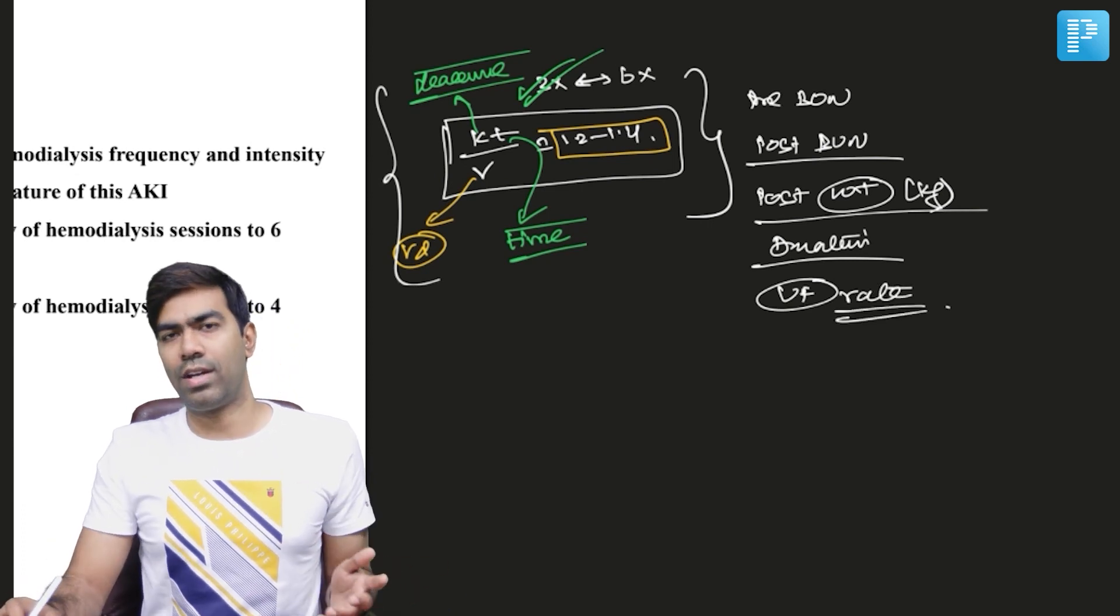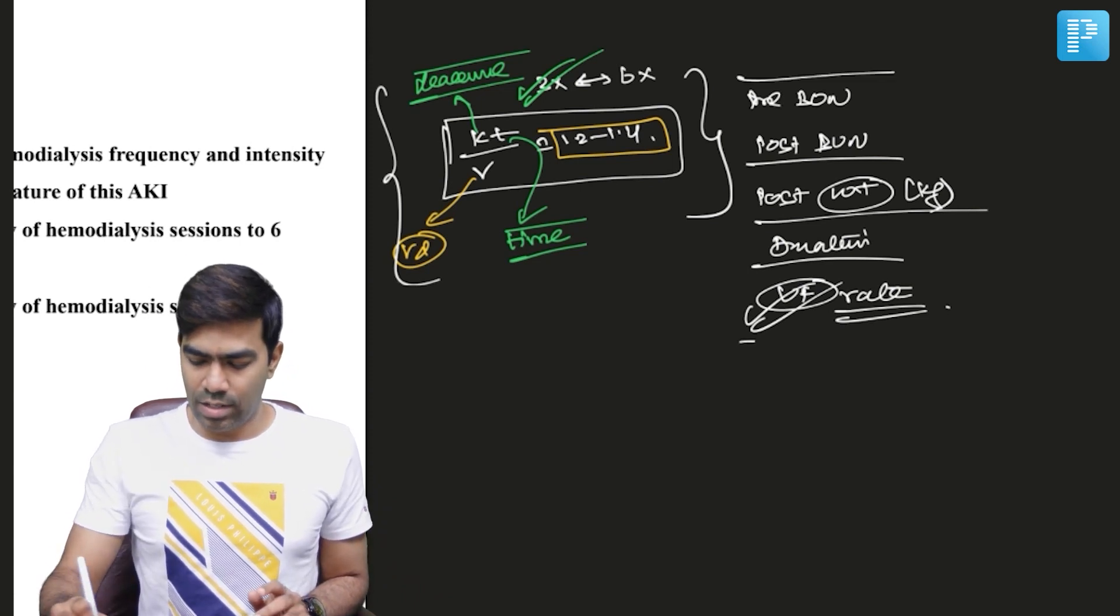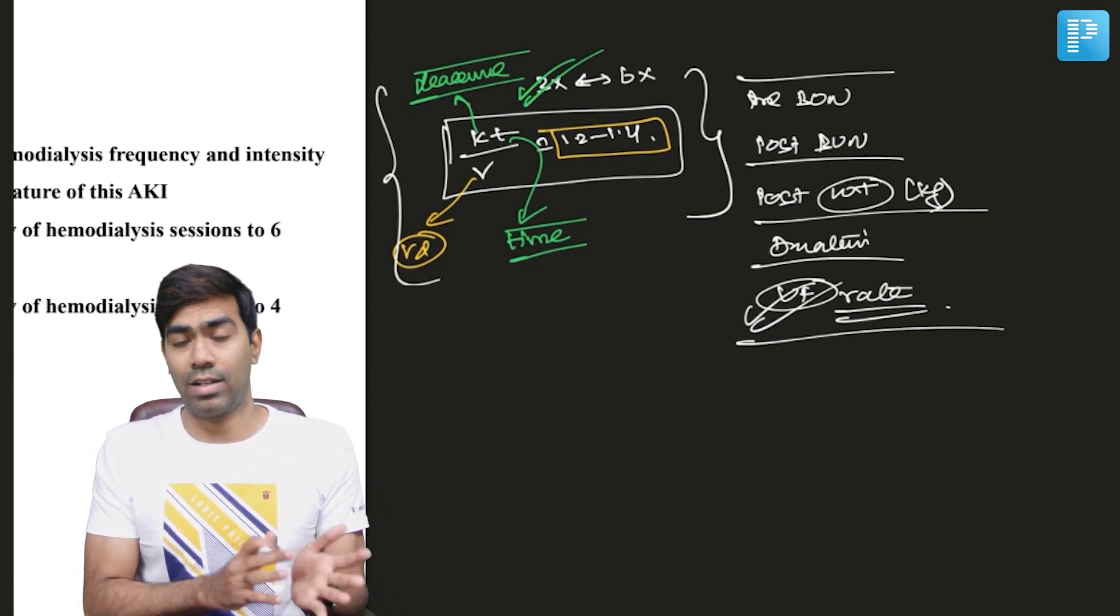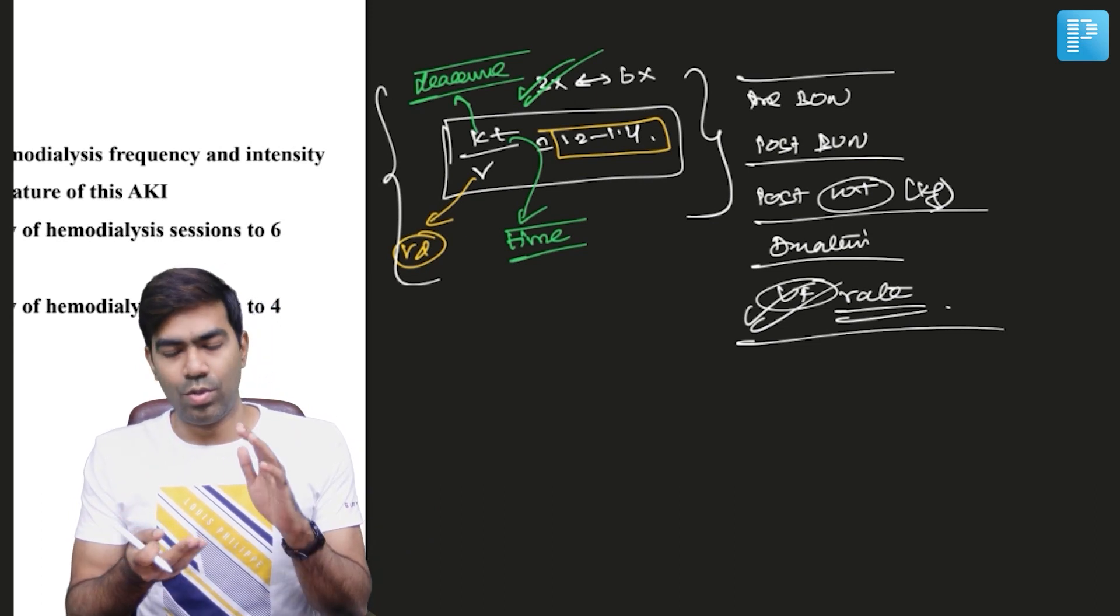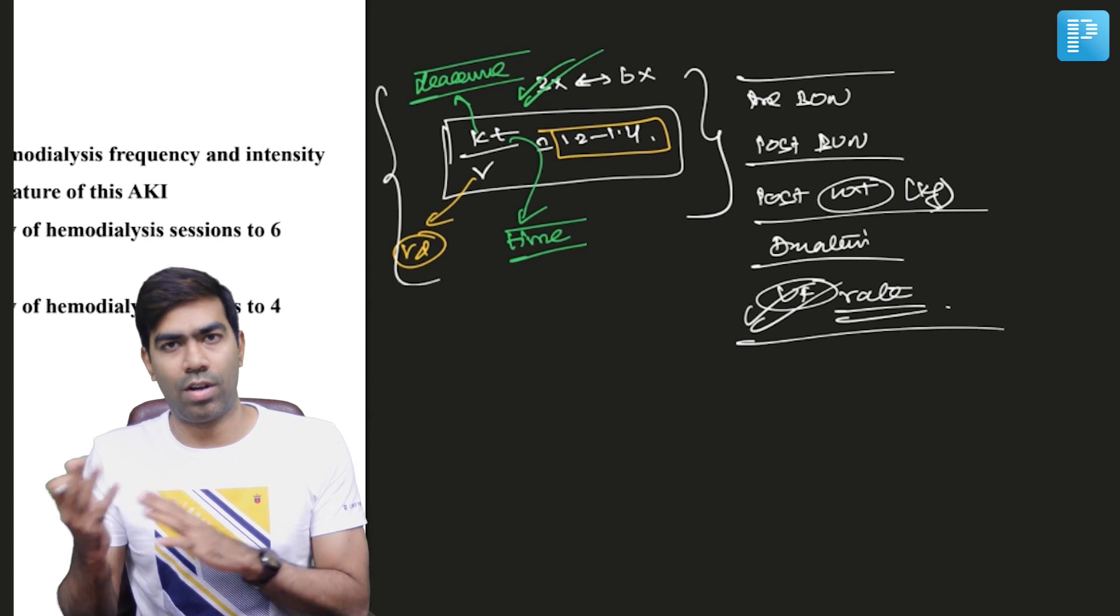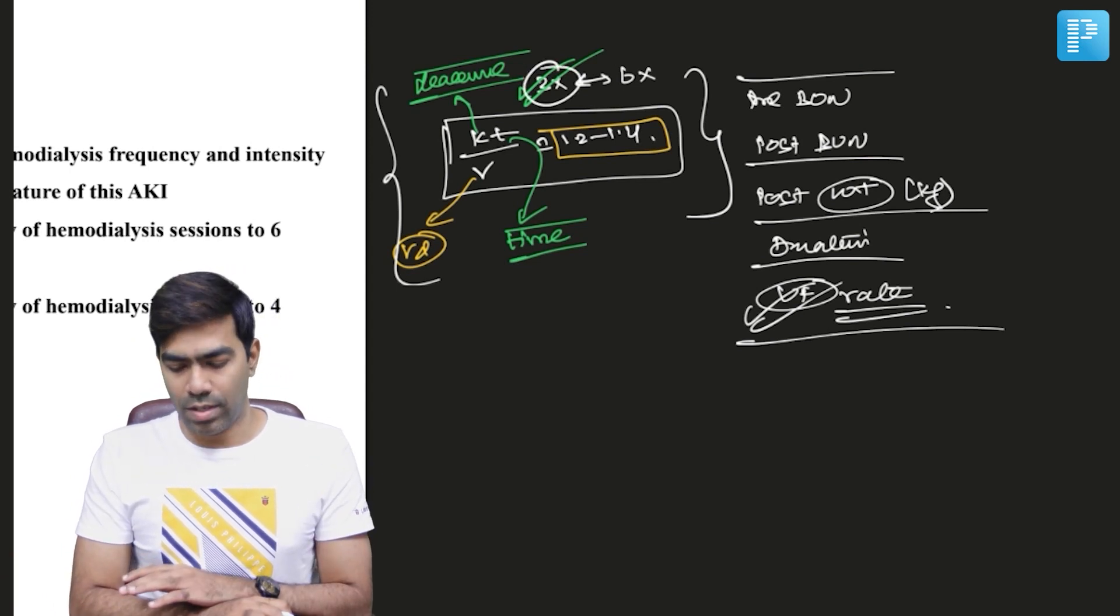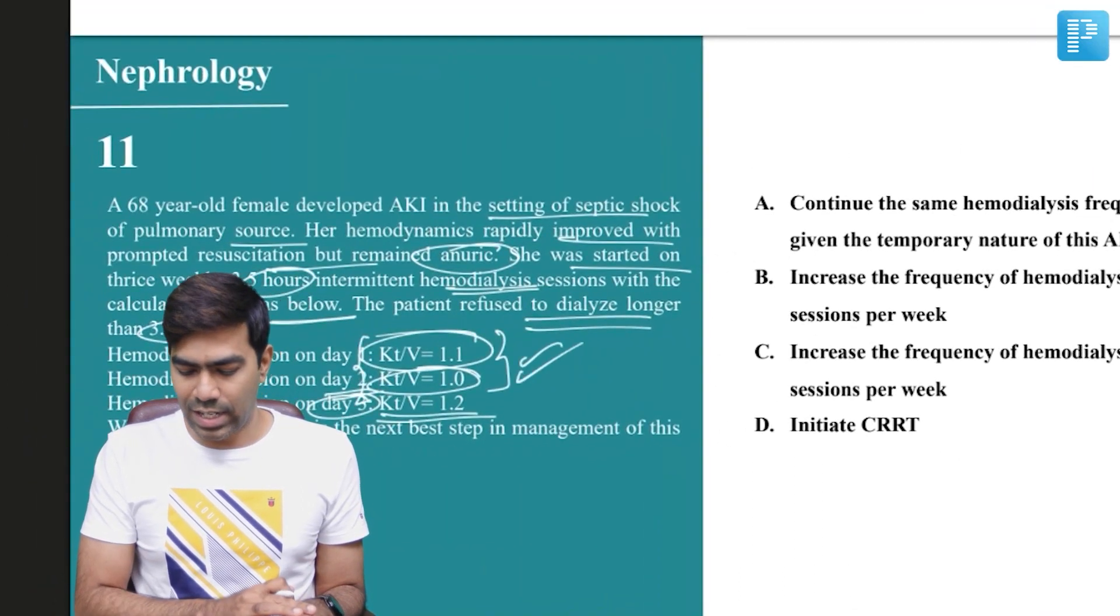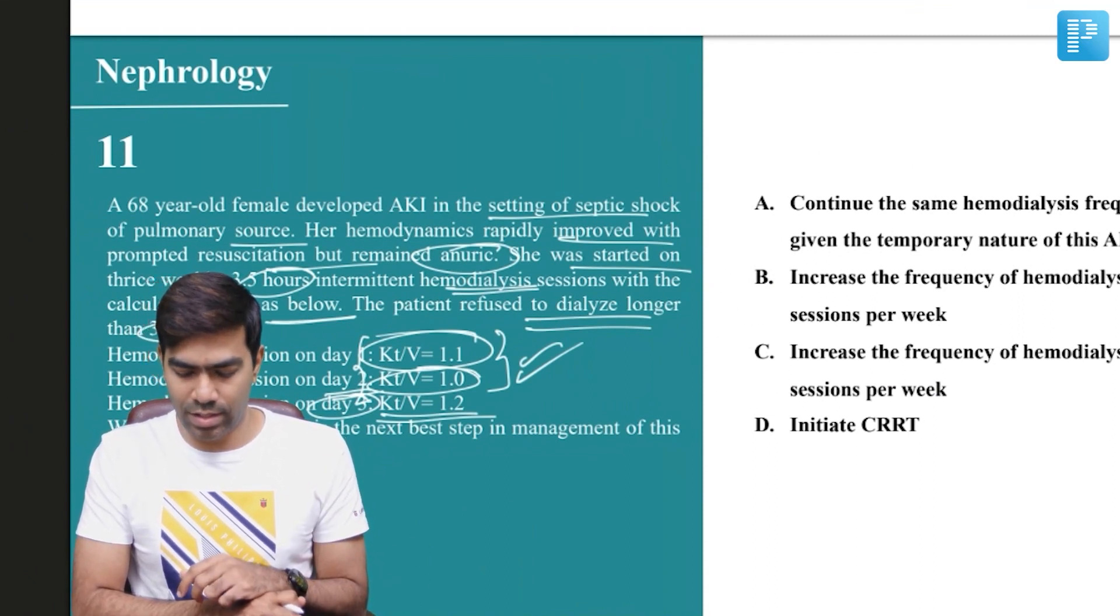Using this data, you will be able to find out the KT/V using many online calculators. Once again, the KT/V is 1.2 to 1.4. Doing dialysis three times per week or six times per week is not going to be of any difference at all, so you go for three times per week dialysis. But look at our patient—this patient is having a KT/V of less than 1.2 in most situations.